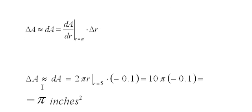So the change in area, or delta A, is approximately the differential of A, which equals 2 pi r, evaluated at r equals 5—that's our starting point.